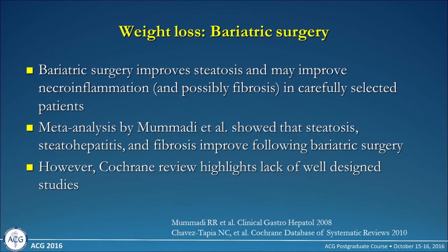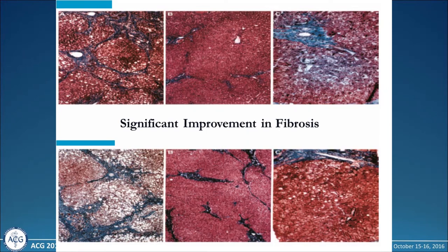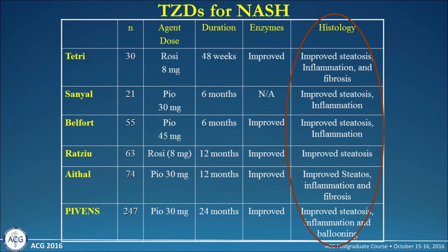Bariatric surgery can be effective and, depending on the length of follow-up, can even improve fibrosis. Fat resolves quite quickly — within the first eight months or so. There is an interesting series from Montreal showing that even cirrhosis over the course of a 10-year period can reverse. NASH cirrhotics who had a biliopancreatic diversion type of bariatric surgery — ten years later their cirrhosis had reversed. So a profound, significant, and sustained weight loss, even in advanced cirrhosis, can lead to tremendous histological benefit.